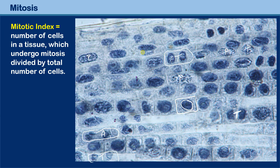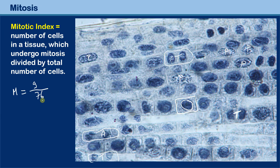You can count the total number of cells — I counted about 76 cells. You also count the number of cells undergoing cell division. I counted one, two, three, four, five, six, seven, eight, nine cells. So the mitotic index is nine cells divided by 76 — you do the math. That's basically the mitotic index, abbreviated MI.